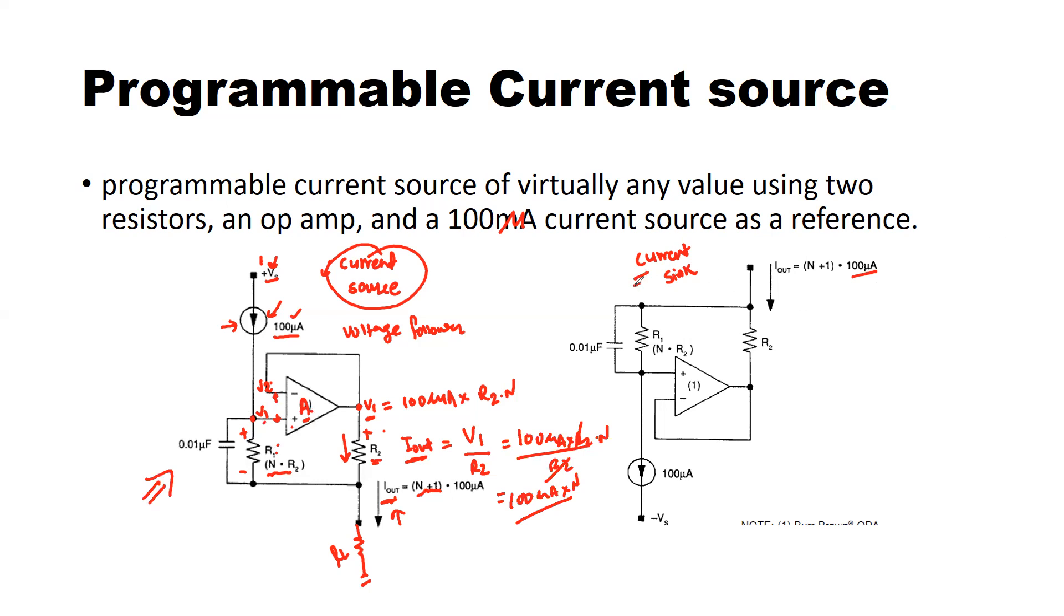Here a current sink now. So current sink is a circuit that is ready to receive a current coming into it. That's why the direction of the arrow shows right here I out is again N times the 100 microampere.